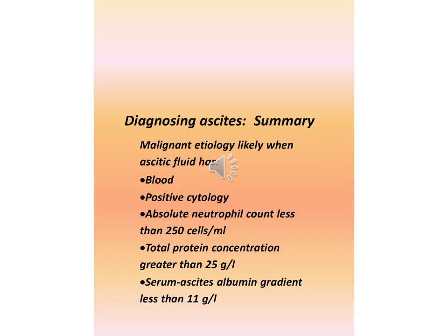Diagnosing ascites summary — malignant etiology is likely when ascitic fluid has: blood, positive cytology, absolute neutrophil count less than 250 cells per mL, and total protein concentration greater than 25 g per liter.